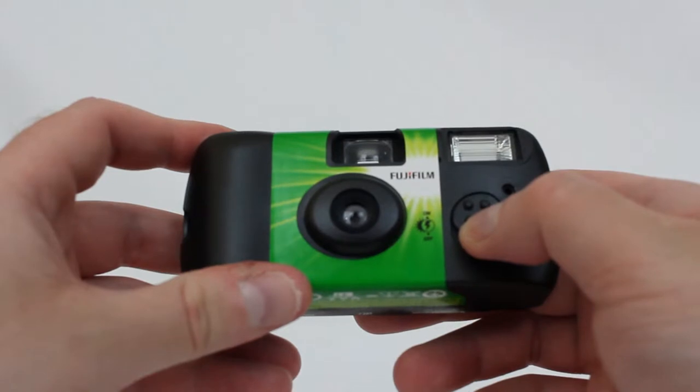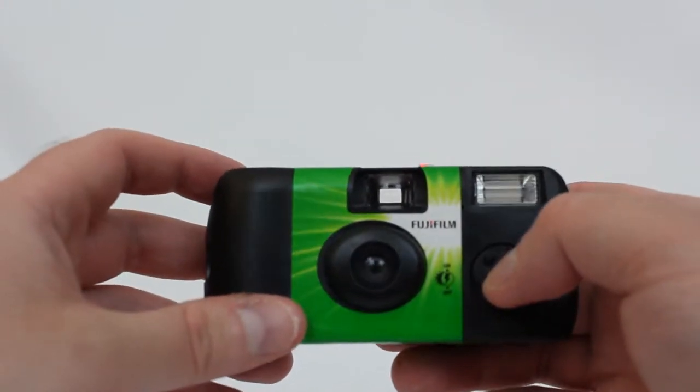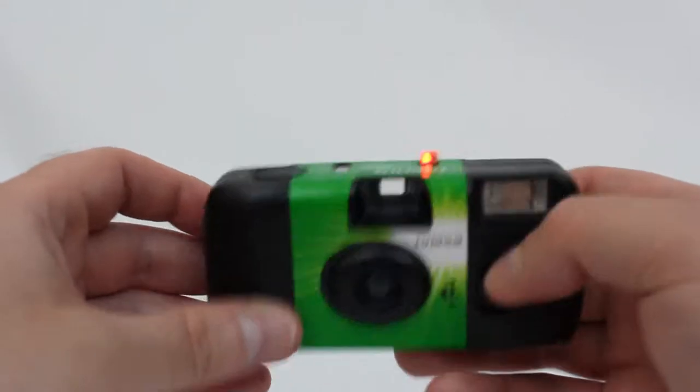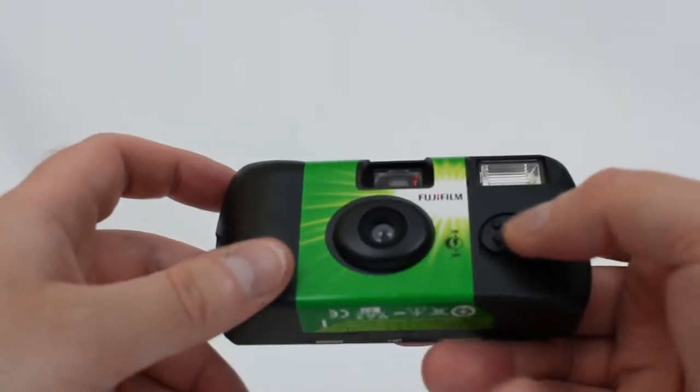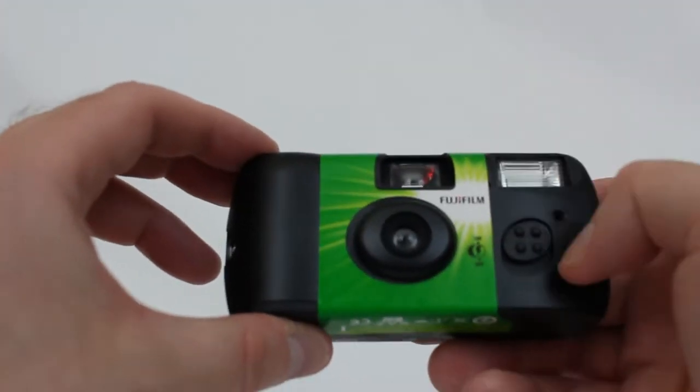On the front we have your flash, which always takes a little time. You can always hear the little wind-up sound coming from the six-volt battery. Here's your shutter release that takes the picture, here's your lens, and here's your actual flash bulb.